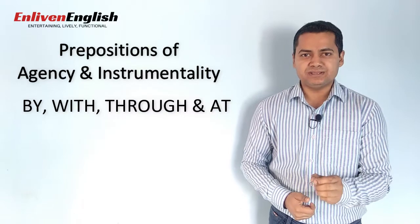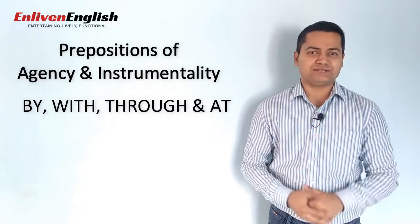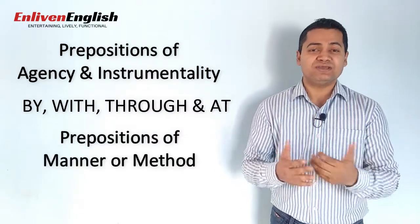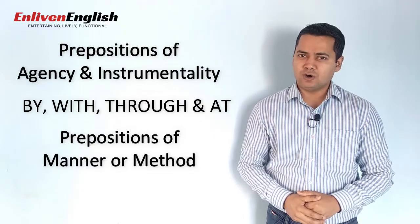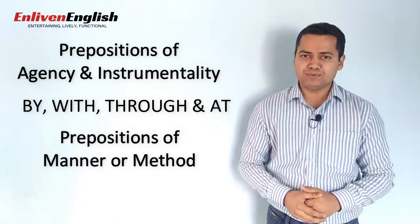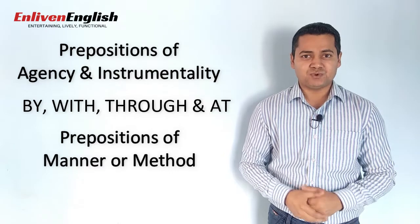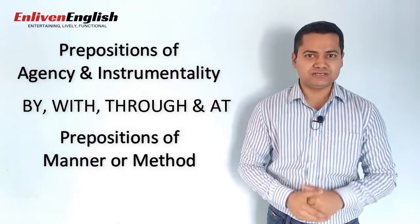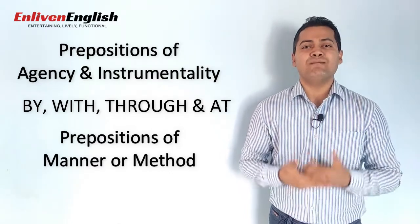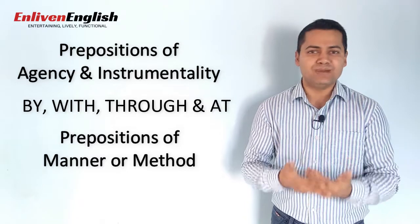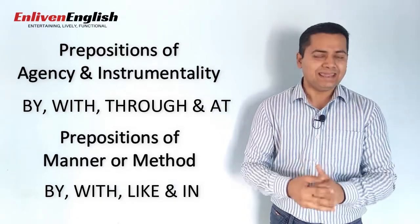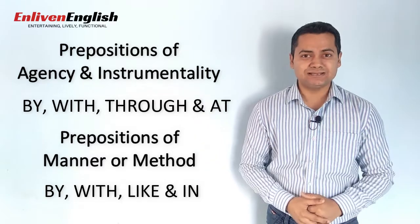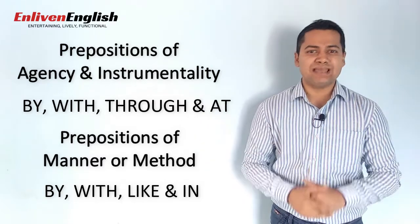The prepositions of agency or instrumentality are: by, with, through and at. Whenever some action or event takes place, we want to tell the manner or method in which it happens. To help us in such situations are prepositions of manner or method: by, with, like and in. So let's get started to have a better understanding of these prepositions.